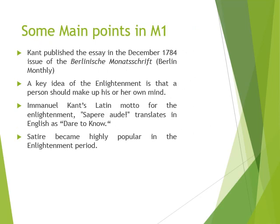I also summarized for you here some of the main important points found in Module 1. The very first thing is that Kant published the essay in December 1784. It was first published in the issue of the Berlin Monthly — this is the title of a magazine or a journal, just like Al-Ahram in Egypt. A key idea of the Enlightenment is that a person should make up his or her own mind. He asks us to dare to know — this is the translation of the Latin motto for the Enlightenment.